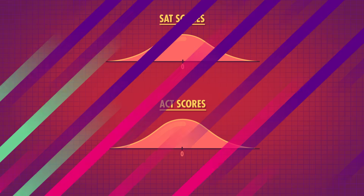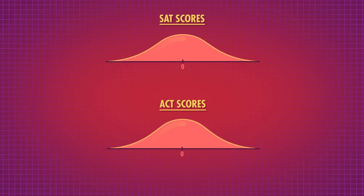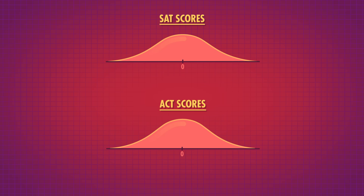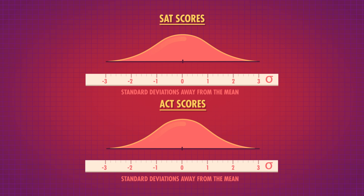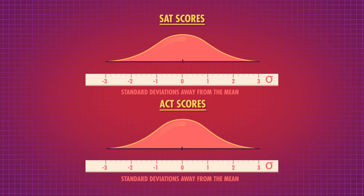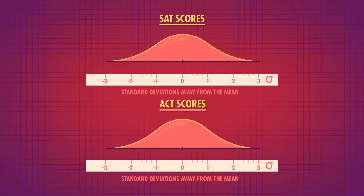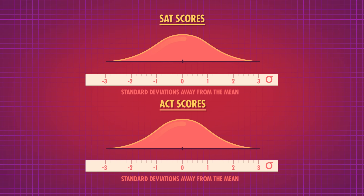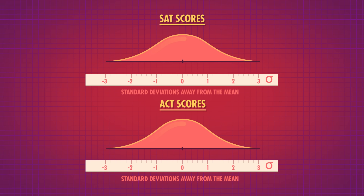But our test scores are still on different scales. A 10 above the mean on the SAT obviously isn't the same as a 10 above the mean on the ACT. The second and final step that will allow us to compare these two scores is to take our already adjusted scores and measure the distance away from the mean using units of standard deviation. We do this by dividing the adjusted scores by the standard deviation of the respective tests.